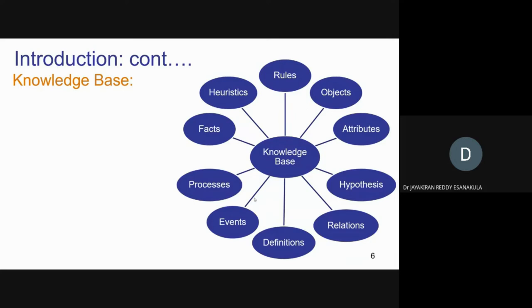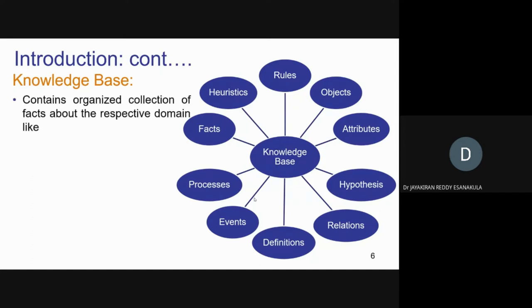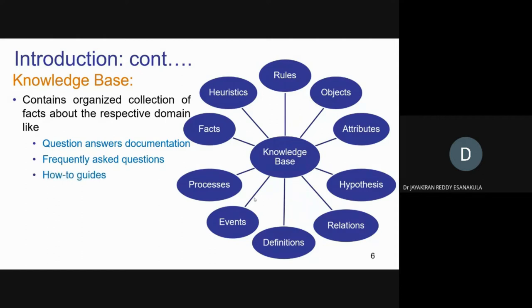The main difference between a database and a knowledge base is that in the knowledge base, the data is logically linked. That link can be changed by the program itself if required in future — that's the powerfulness of knowledge-based systems. It contains an organized collection of facts about the respective domain, like question-answers, documents, frequently asked questions, how-to guides, and troubleshooting instructions.